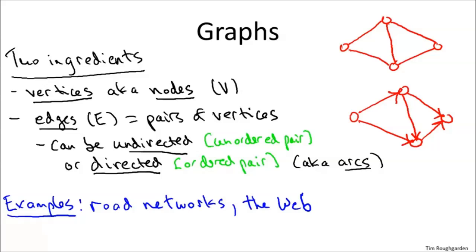The web is often fruitfully thought of as a graph, a directed graph. So here the vertices are the individual web pages, and edges correspond to the hyperlinks. The first vertex in an edge, the tail, is going to be the page that contains the hyperlink. The second vertex or the head of the edge is going to be what the hyperlink points to.